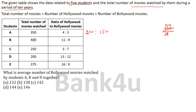For student B, total is 400. The ratio is 11 is to 9, so 11 plus 9 equals 20. 400 divided by 20 equals 20. So Hollywood = 20 into 11 = 220, and Bollywood = 20 into 9 = 180. The split is 220 is to 180.